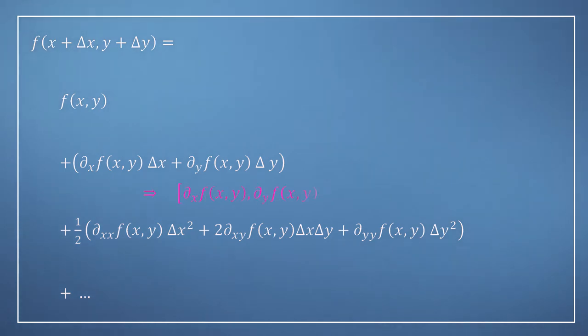So we can actually re-express this as just the Jacobian multiplied by a vector containing delta x and delta y, which we can write as delta bold x, where the bold x signifies a vector containing those two terms.